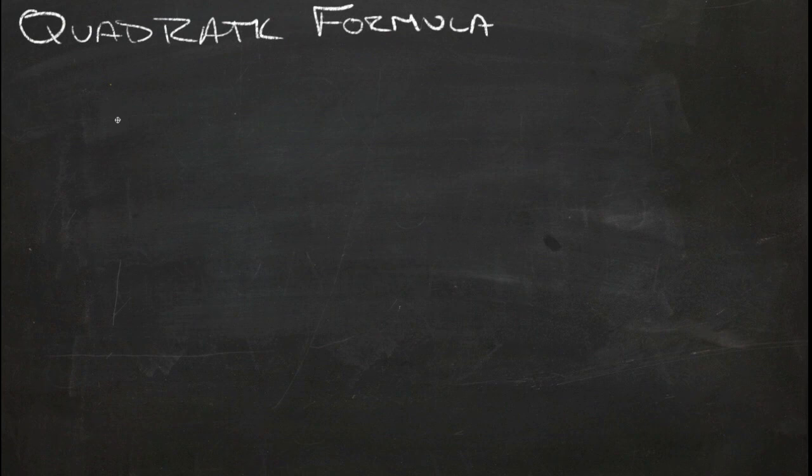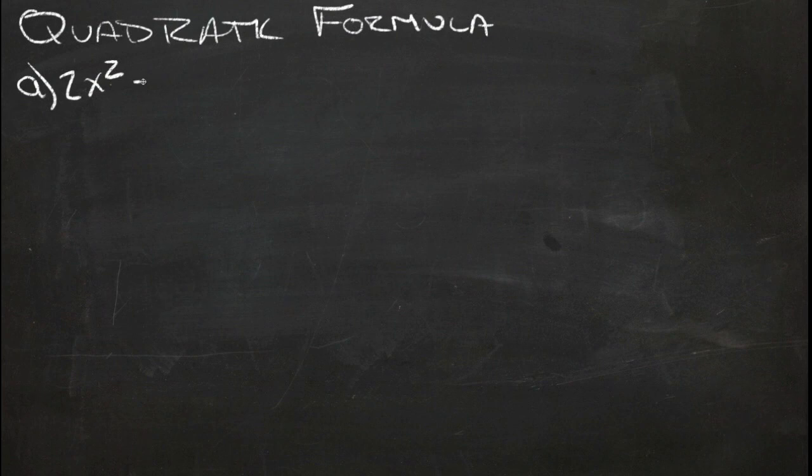It's not always the most convenient, but it's nice to know that there's something you can use that will always get you the answers you're looking for. So when you're looking for the x-intercepts of a quadratic equation, like A here, which is 2x squared plus 3x plus 1 equals zero.